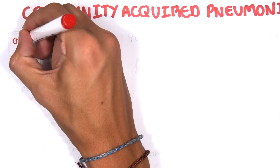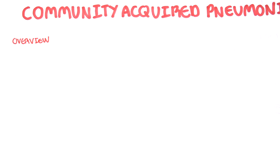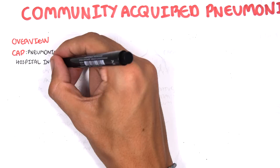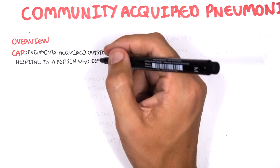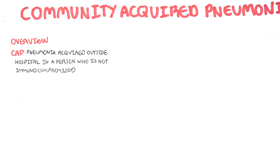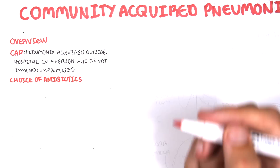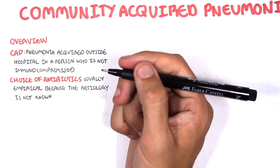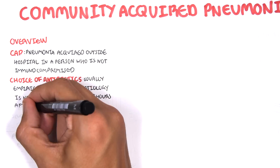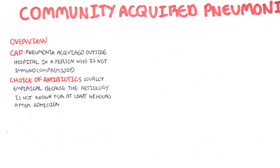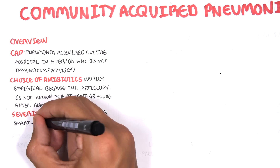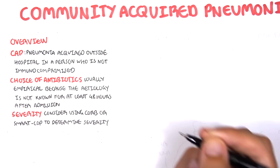Community Acquired Pneumonia is pneumonia acquired outside hospital in a person who is not immunocompromised. The choice of antibiotics is usually empirical because the etiology or the cause of the pneumonia is not known for at least 48 hours after admission. Severity of the pneumonia is considered using the CORB, CURB, or the SMART COP, and this is used to determine severity.